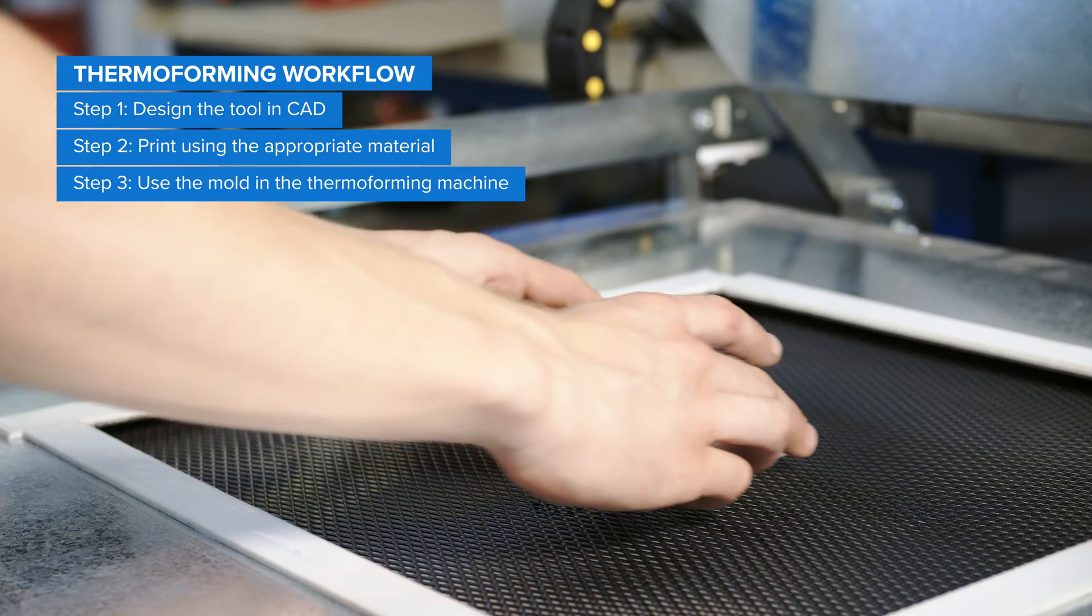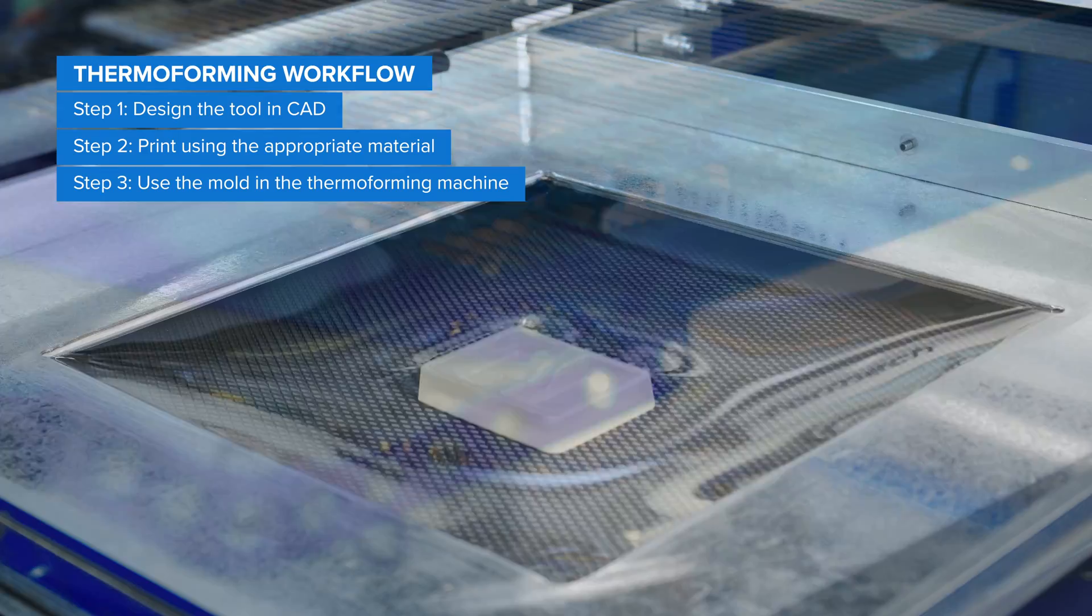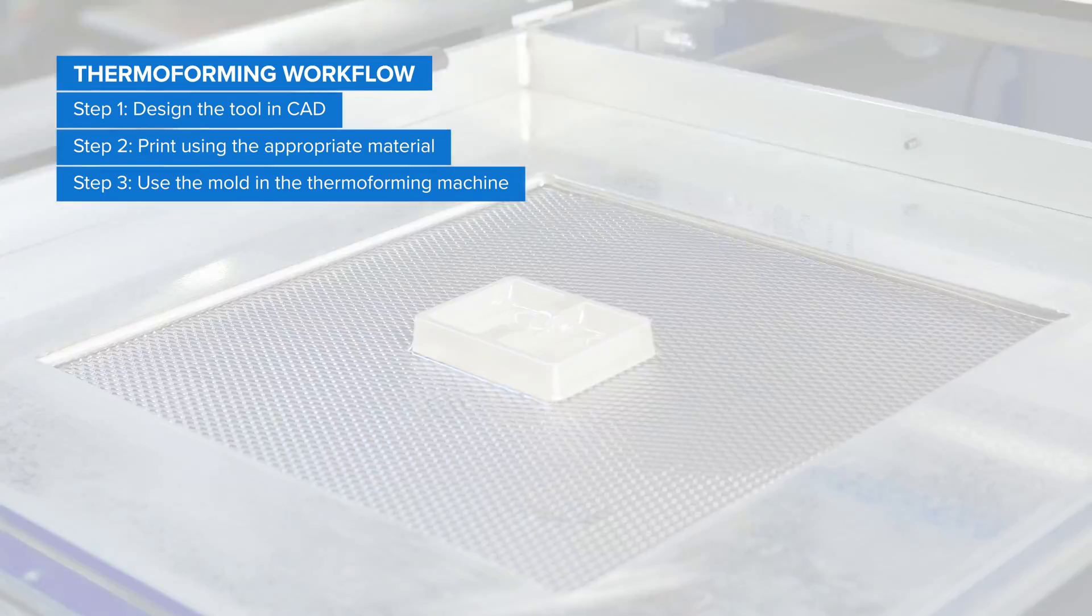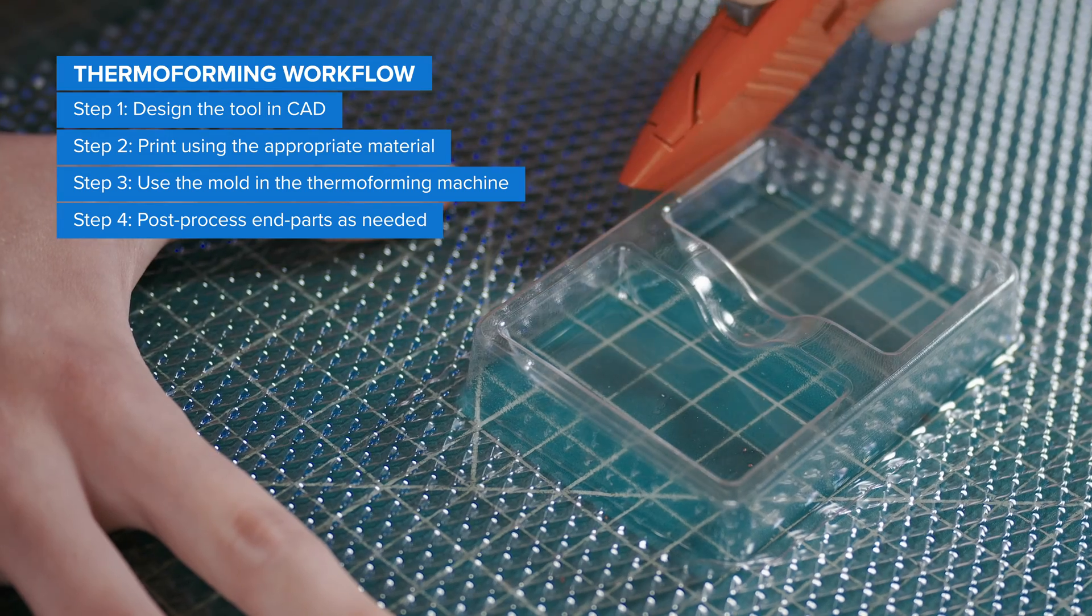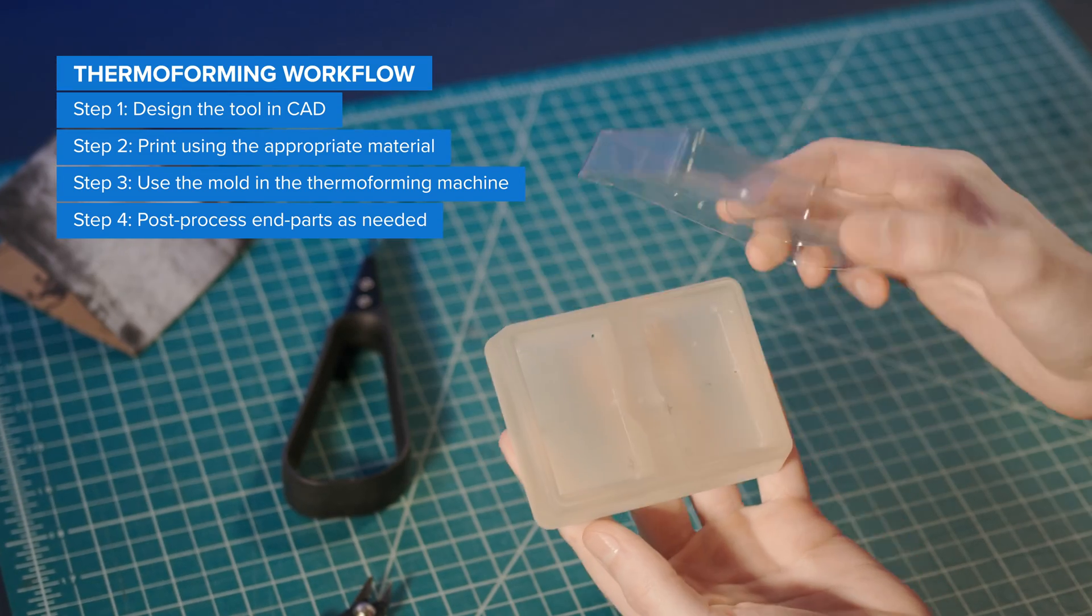Next, insert the 3D printed mold into the thermoforming machine and use it in your normal workflow. Once it cools off, remove the thermoformed part, trim off the excess material, and post-process the part as needed.